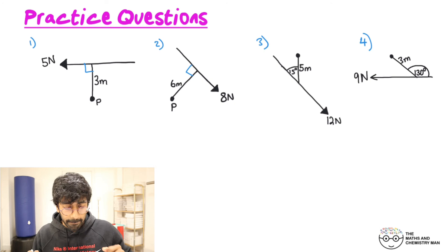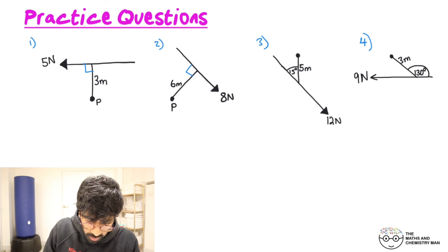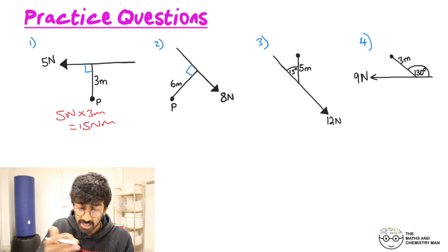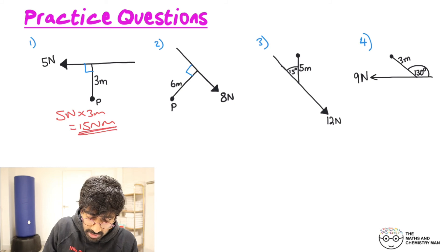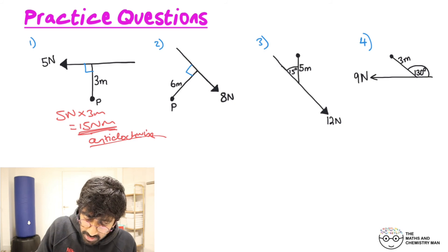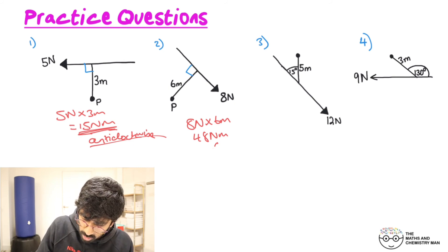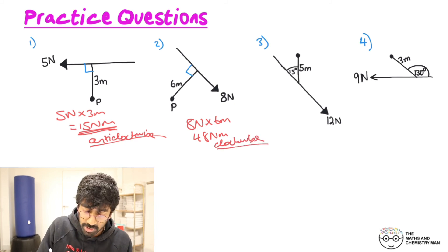Let's get through these answers. Number one and two should have been super easy because you were given the perpendicular distances. For the first one: 5 newtons times 3 meters gives 15 newton meters, anti-clockwise — or positive 15 newton meters. For the next one: 8 newtons times 6 meters gives 48 newton meters, clockwise — or minus 48 newton meters.